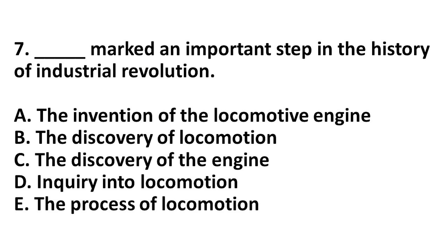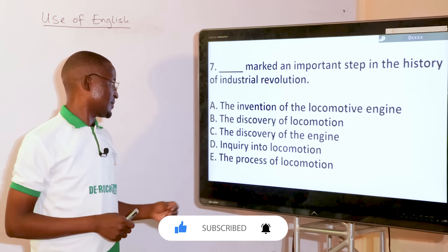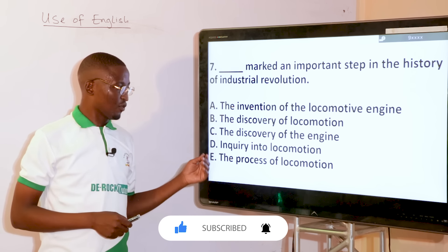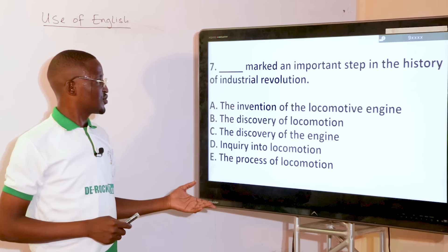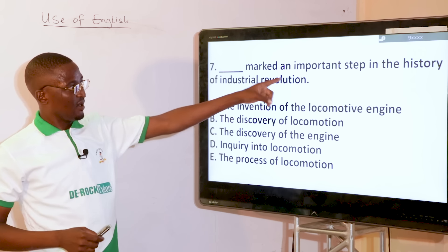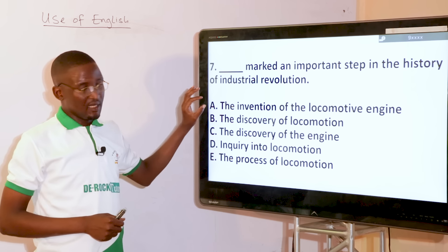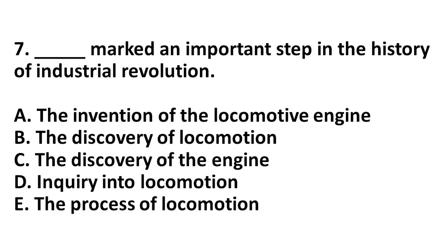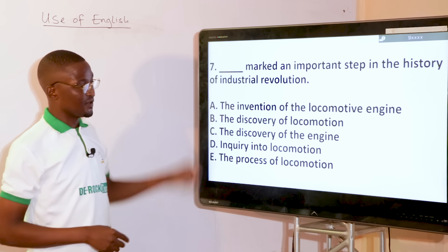Dash marked an important step in the history of the industrial revolution. The options are: the invention of the locomotive engine, the discovery of locomotion, the discovery of the engine, inquiry into locomotion, the process of locomotion. Since we are talking about marking an important step, we are talking about an invention. Option A — the invention of the locomotive engine marked an important step in the history of the industrial revolution.